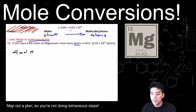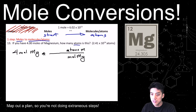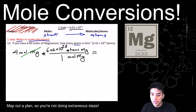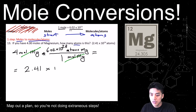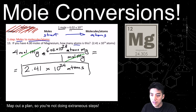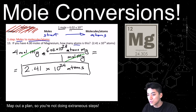Start by writing down 4 moles of magnesium. Times sign, draw a line. Put moles of Mg on the bottom and atoms on top. The conversion factor says 1 mole equals 6.02×10²³ atoms. Multiply the numbers and cross out the units. The answer is 2.41×10²⁴ atoms. Remember: 1 mole of anything is 6.02×10²³ — you can have a mole of erasers, pencils, basketballs. This applies to atoms because atoms are so small.